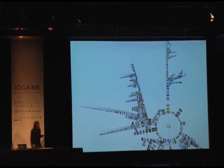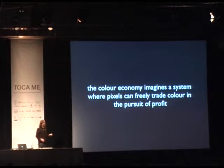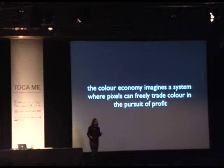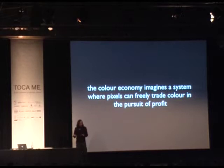We look at this project called the Color Economy. In the Color Economy, what I've done is imagined a system where pixels can trade in color. Pixels only have really one thing to trade — they have red, they have green, and they have blue. So I thought, if you were to release a pixel into the world and try to make it into a big capitalist pixel system, how would it be able to trade with another pixel?